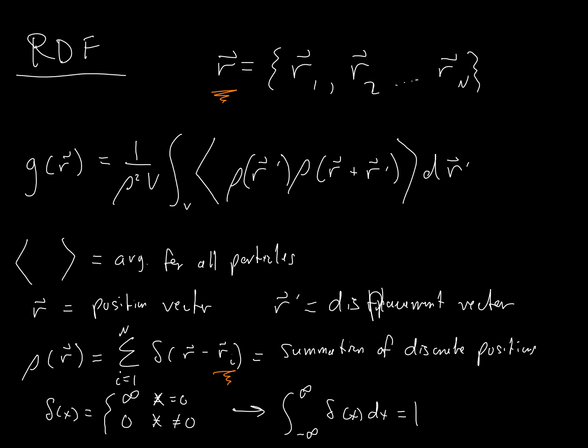This big function up top — the first term is basically an array of all of the atomic positions, and you're multiplying it by a displacement. The only way that this function will give us anything that's not 0 is if there are two atoms that are separated by a distance r prime. Because we're integrating the Dirac delta function, which gives us 1. These front terms are normalizing it based on the bulk density.